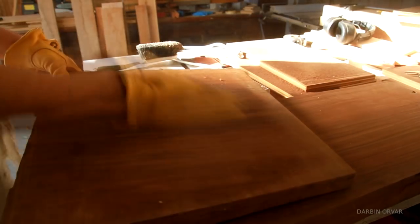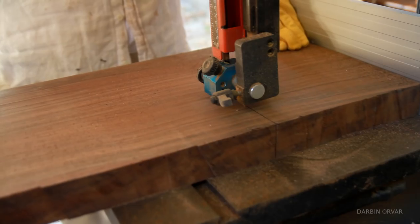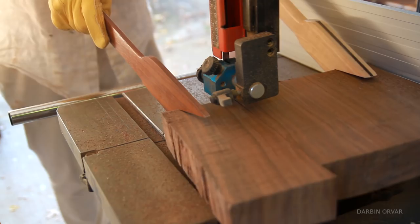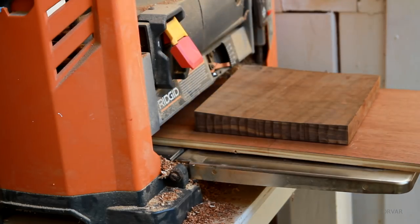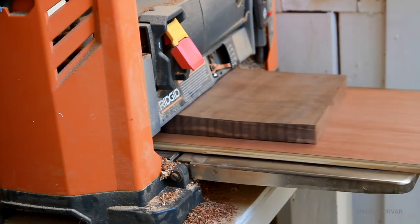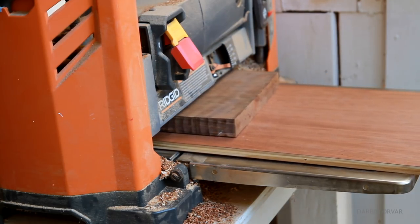For the base and the top, we're using some really beautiful walnut. Because this piece was so small, I utilized my planer as a jointer by hot gluing it to a flat piece of plywood and running it through on both sides.